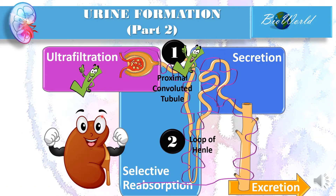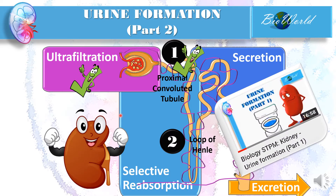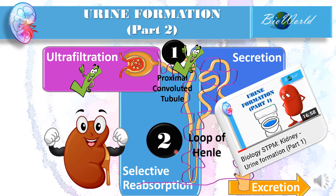Hi there, I'm back with urine formation part 2. For those of you who haven't watched part 1, please do so because this is the continuation on selective reabsorption. Just to refresh, urine formation starts with ultrafiltration at the glomerulus and the Bowman's capsule to produce a glomerular filtrate. Then selective reabsorption of the glomerular filtrate starts at the proximal convoluted tubule to form filtrate. Today I'm going to continue on the second stage of selective reabsorption, covering what happens to the filtrate at the loop of Henle and how urine finally forms.